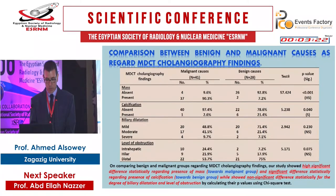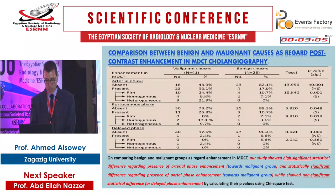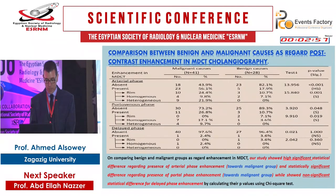Regarding multi-detector CT cholangiography findings, there was a highly significant difference regarding the presence of a mass for the malignant group, a significant difference regarding calculi for the benign group, and a non-significant difference regarding the degree and level of obstruction for both groups. There was a highly significant difference in the arterial phase, a significant difference in the portal venous phase regarding the malignant group, and a non-significant difference in the delayed phase for both groups.